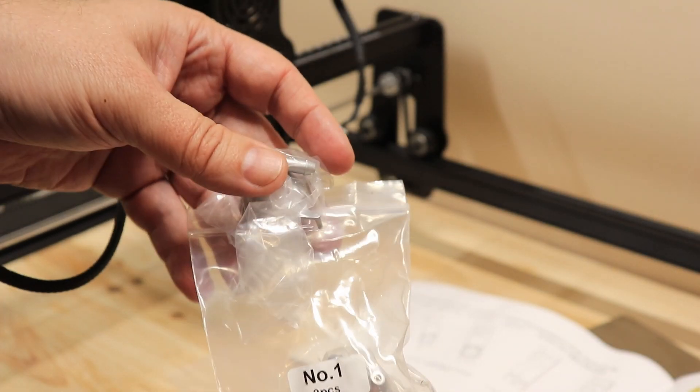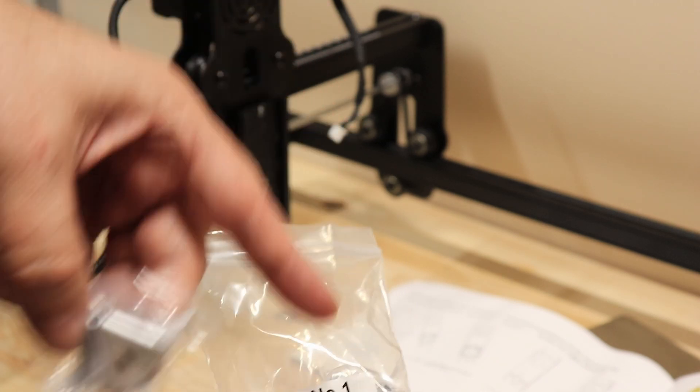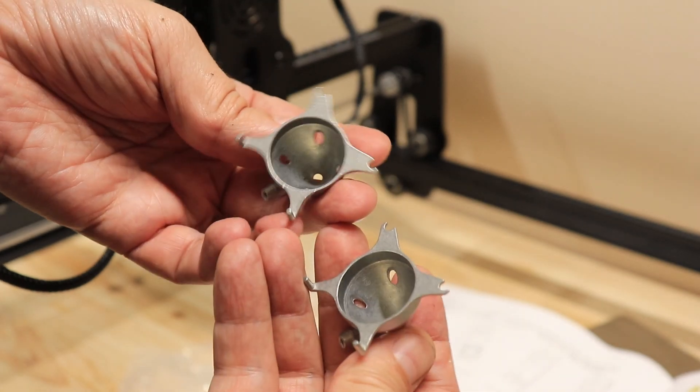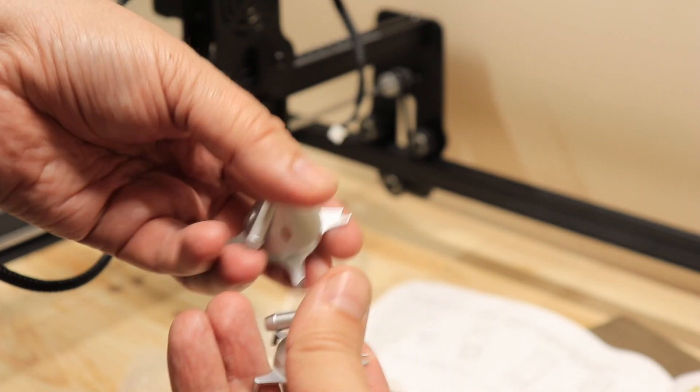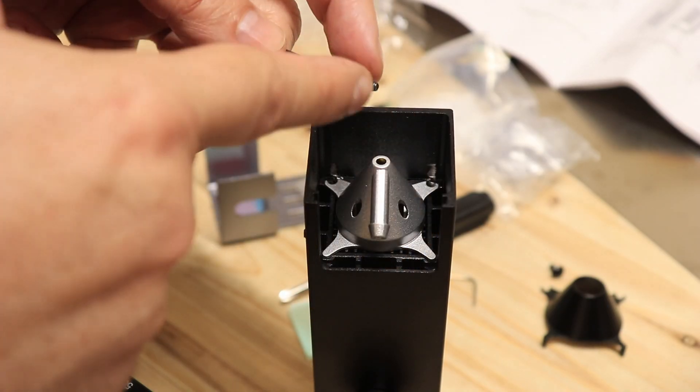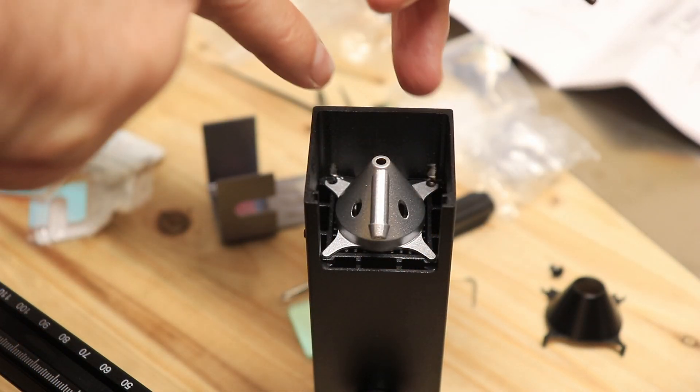According to the manual I am using the air assist nozzle number 1. I am not sure why they provided 2 pieces, they look equal.